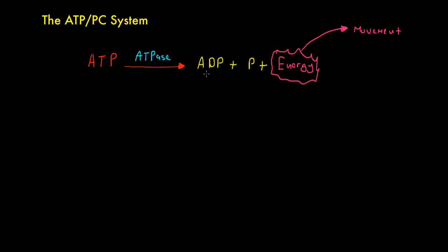So the question that arises is what do we do with ADP and the other phosphate group to re-form ATP so that this cycle can continue?